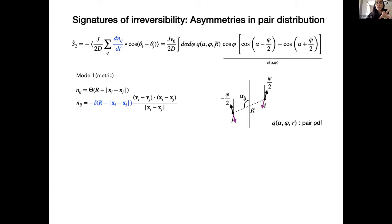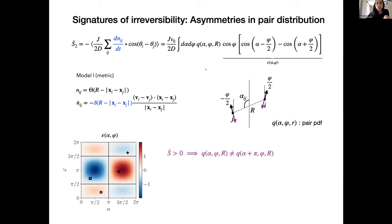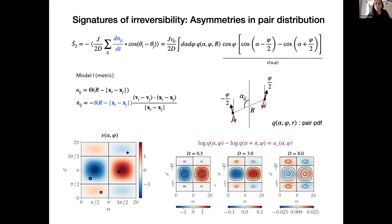And if we call Q alpha phi, the probability distribution of pairs of particles at distance R parameterized by these two angles in two dimensions. And we massage the first equation, the first equation, we obtain something that looks like this. So it's an average over the distribution of pairs of particles of this function epsilon alpha phi. And epsilon alpha phi is a function that does not depend on the parameters of the model. We can plot it. It looks like this. And of course, as you can see, it's completely anti-symmetric under the transformation alpha to alpha plus pi, which is the effect that the time reversal transformation has on the coordinate alpha. So in order to have a positive entropy production, we need to have an asymmetry in the distribution of pairs of particles, which was actually detected in our numerical simulations. In this plot, I'm showing the anti-symmetric part of the log of this distribution. And as you can see, there's a strong positive correlation with epsilon alpha phi.